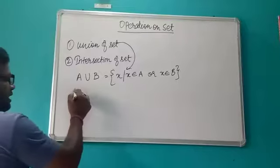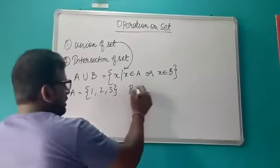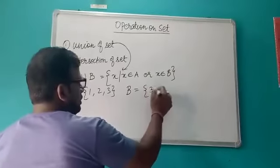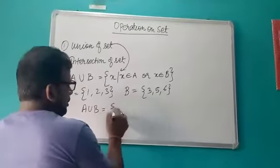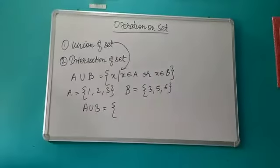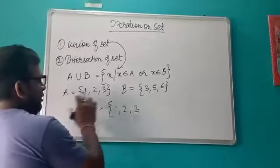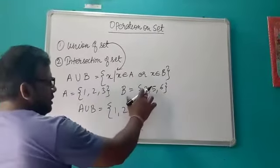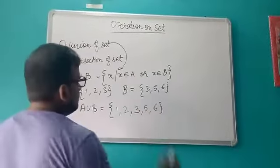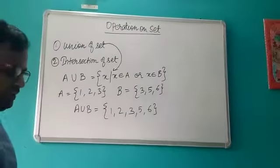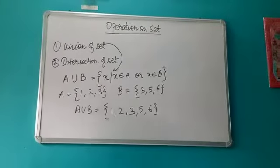For example, suppose set A = {1, 2, 3} and set B = {3, 5, 6}. Then A union B means all the elements in both sets: 1, 2, 3 from A, and since 3 is already there we skip it, then 5 and 6. Repetitive elements are never counted when we do the union of sets. This is the meaning of union of two sets.